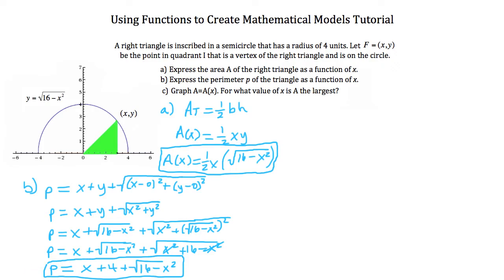Lastly, we've been asked to graph A(x) for what value of x is A the largest. So I'm going to start with graphing that, and to graph it, you just want to put this function into your calculator. When you do, it's going to look like this. Now the orange lines there are all the irrational values for this function, so you don't have to worry about those. What you're really concerned about is those blue lines. That's the actual graph of your function.